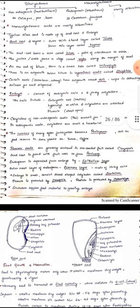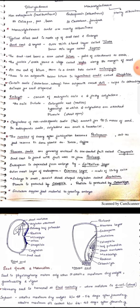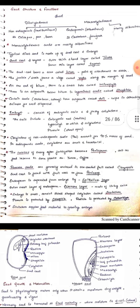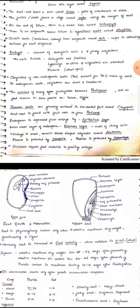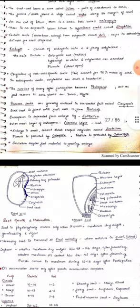The seed coat bears a scar called hilum, that is point of attachment of stalk. The funicle or stalk forms a ridge called raphe along the margin of seed. At one end of the hilum there is a small hole called micropyle. There is an outgrowth below hilum in leguminous seed called strophiole. Certain seeds have outgrowth like in castor bean or nutmeg which helps in attracting the animals for seed dispersal. The function of aril is to attract the birds and it also enhances the cross pollination by attracting the insects and birds.